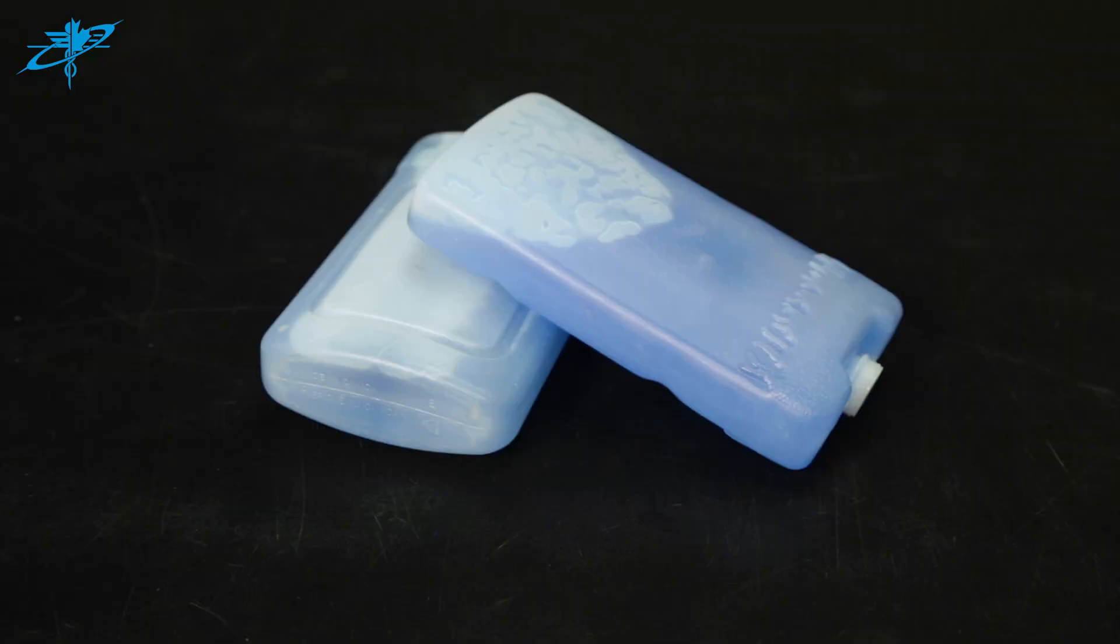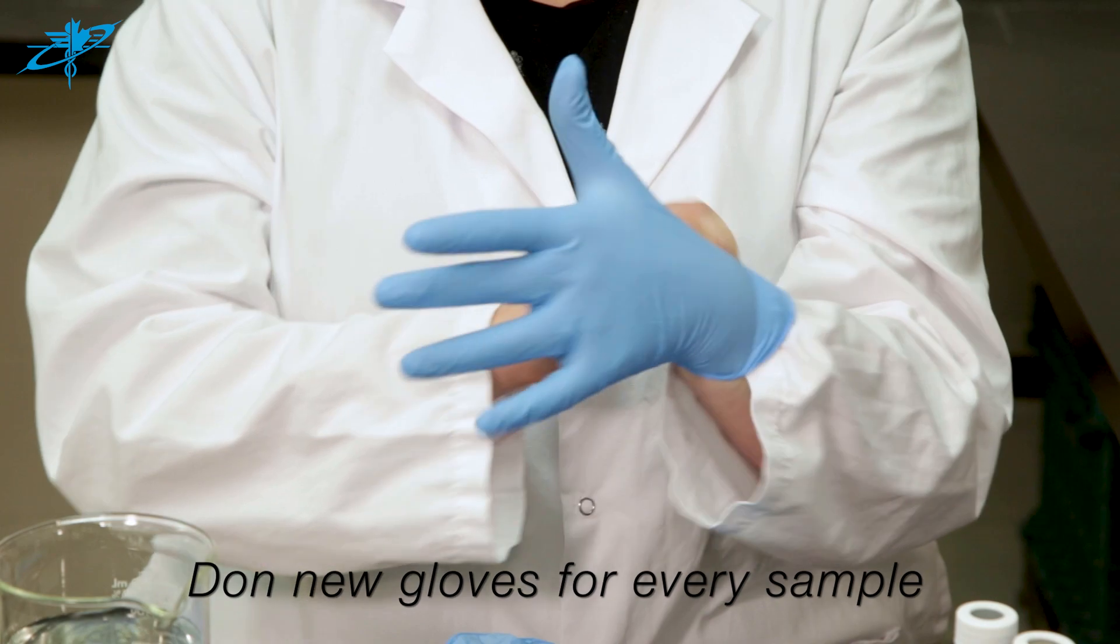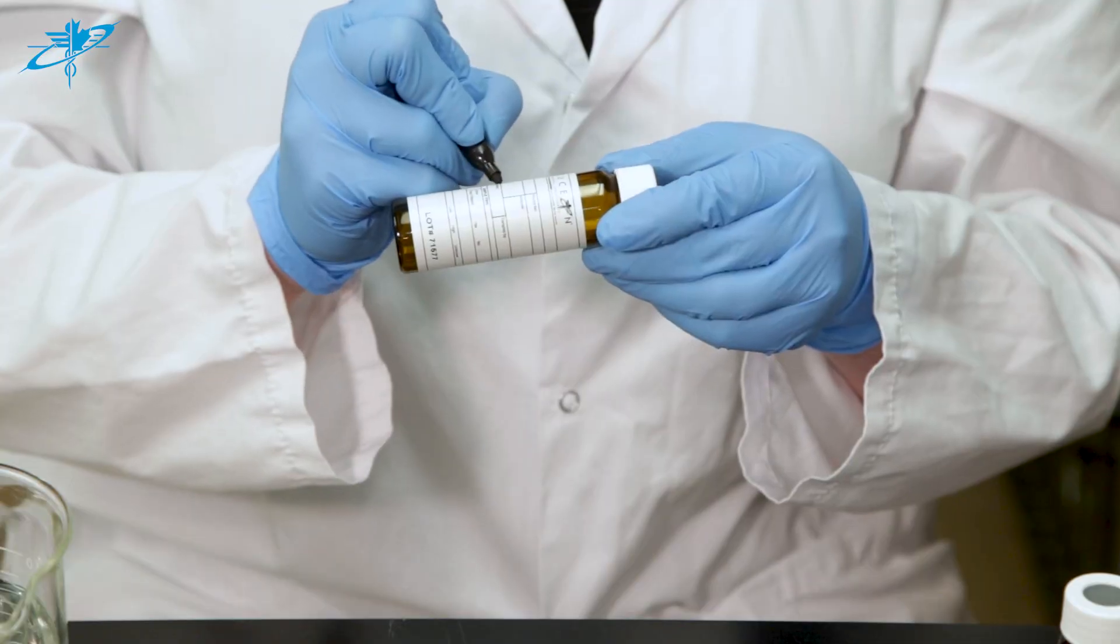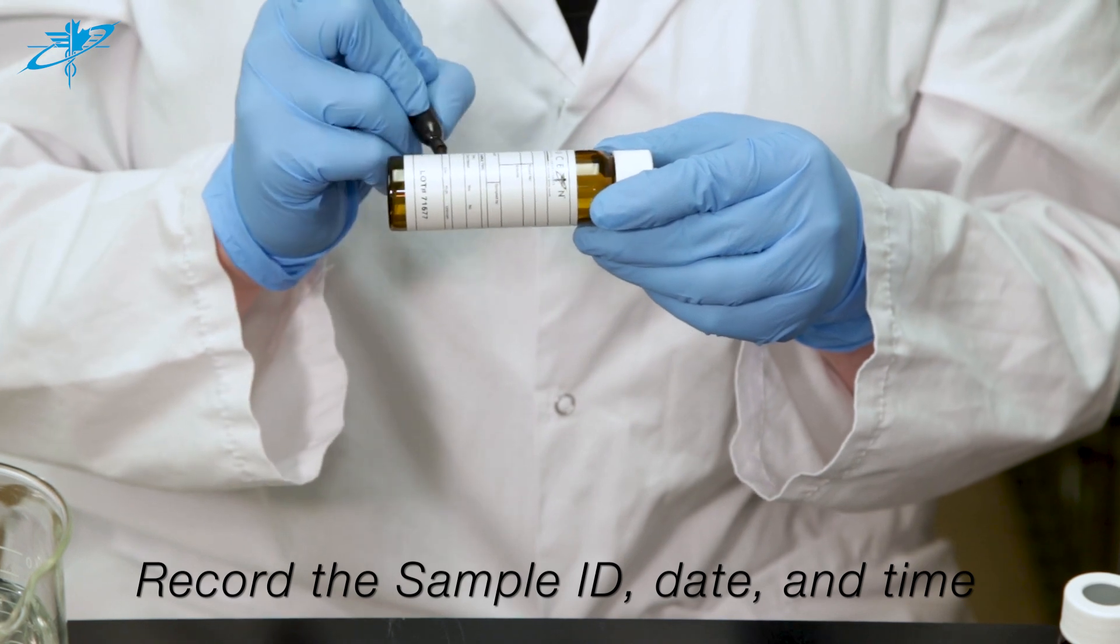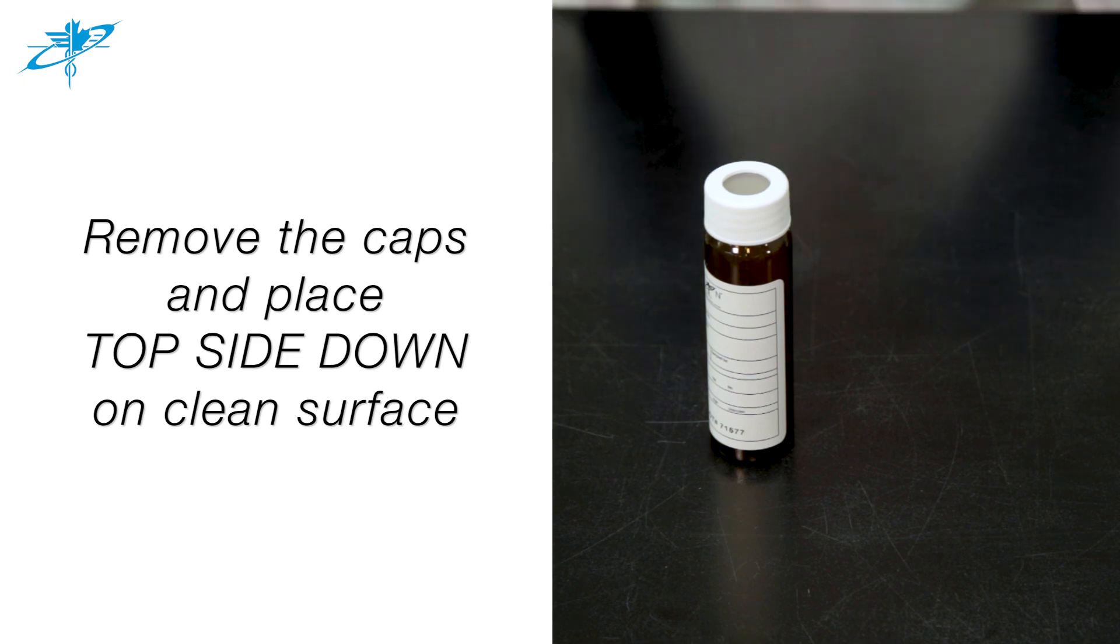Don a new pair of gloves for every sample. Record the sample ID, sampling date, and time on each vial label. Remove the caps from the vials and place them topside down on a clean surface, ensuring you do not touch the inside of the cap or threads.